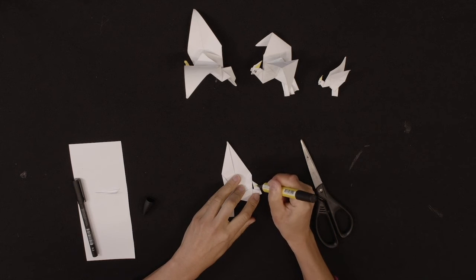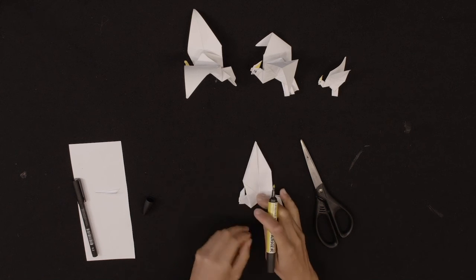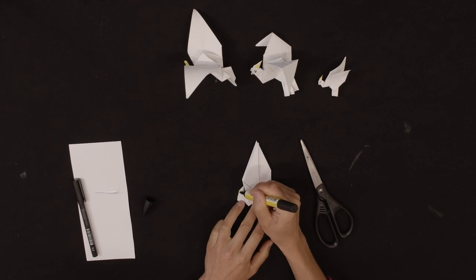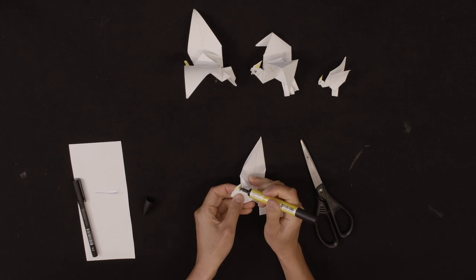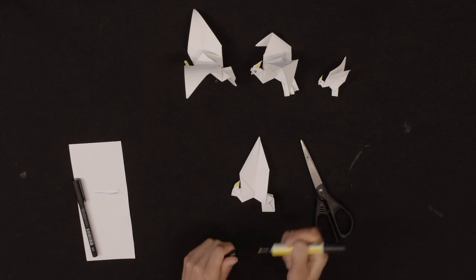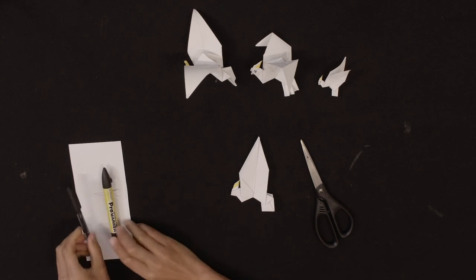Now you can decide how long you'd like the crest to be and cut it. You can color the crest just at the top or however long you'd like it to be. I think looking at the cockatoos, they all seem to have slightly different characters, so you can give yours your own character.